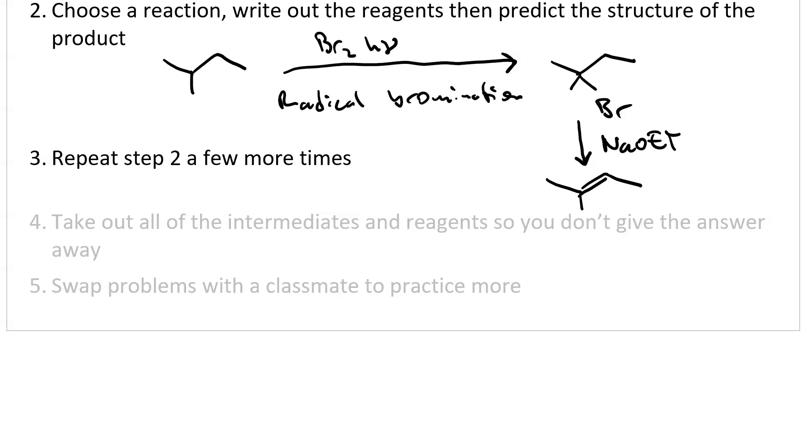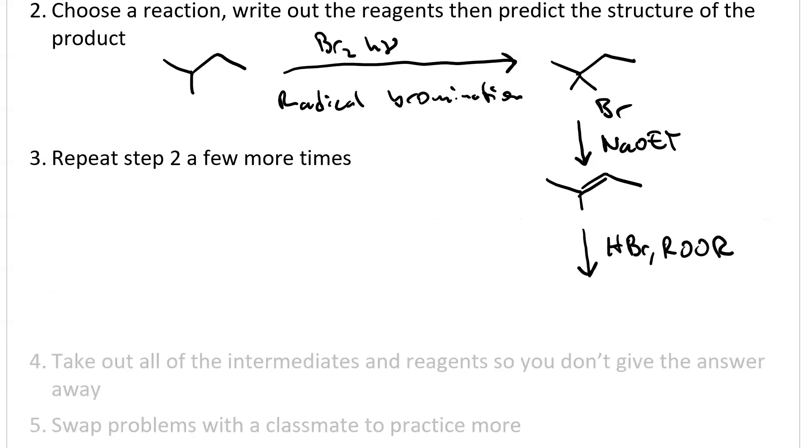Now I'm going to do anti-Markovnikov hydrobromination because that'll move the functional group. So adding HBr and ROOR now gives me the less substituted alkyl bromide.